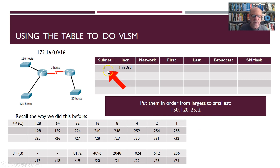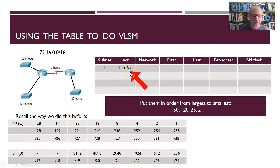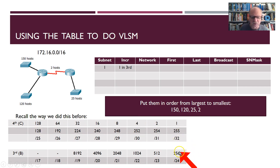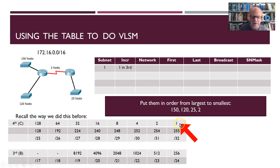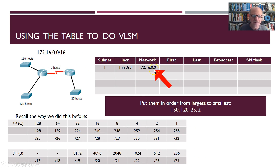I'm also going to add a column to keep track of the increment sizes I'm going to use, because I'm going to increment by different amounts each time. If I need 150 hosts, I look across the chart: I can't get 150 from 126, but I can get 254 here, so I'm in the slash 24 column — increment by 1 in the 3rd octet. Let's put our first network number in, and then increment by 1 in the 3rd octet.